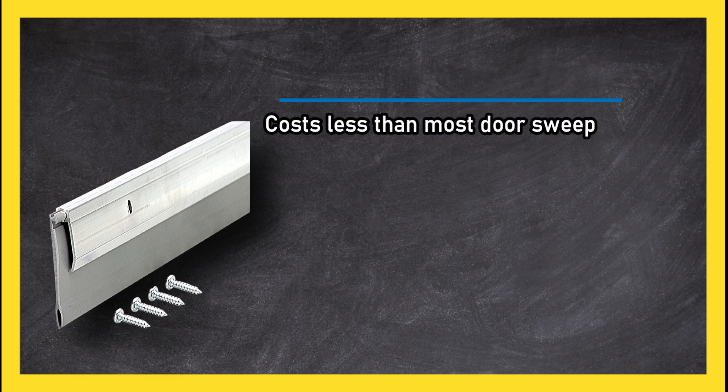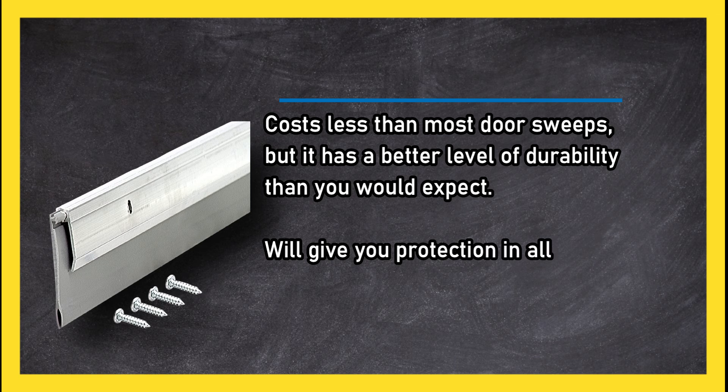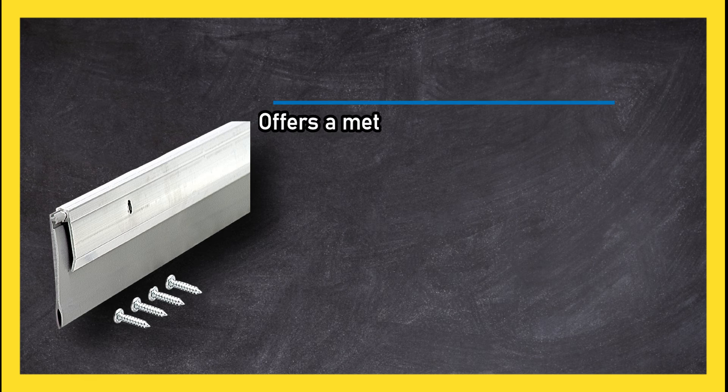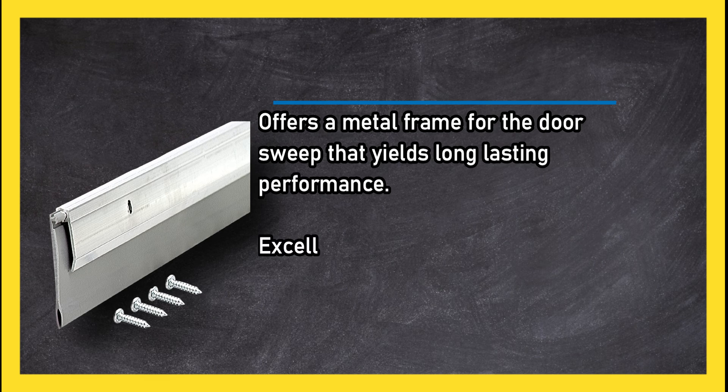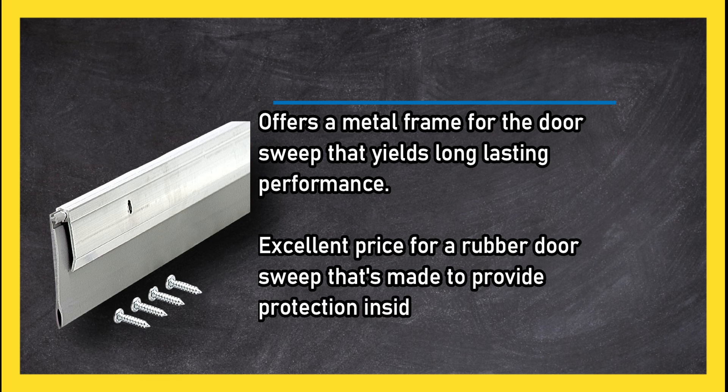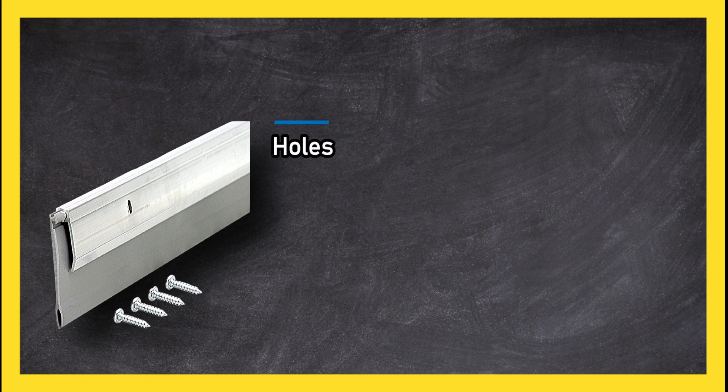At number one, MD Building Products 36-inch door sweep. Costs less than most door sweeps but has a better level of durability than you would expect. Will give you protection in all seasons. All installation parts are included. Offers a metal frame for the door sweep that yields long-lasting performance. Excellent price for a rubber door sweep that's made to provide protection inside a commercial environment.